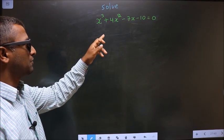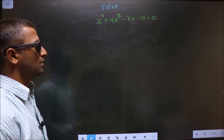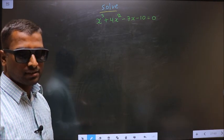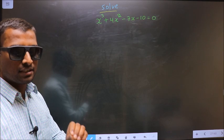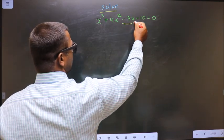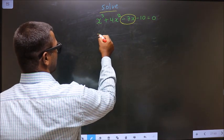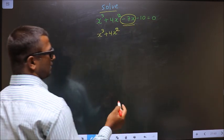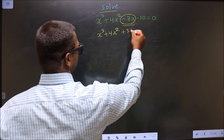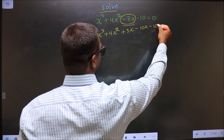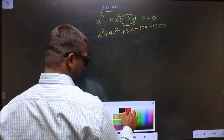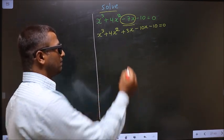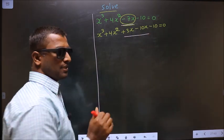Solve x³ + 4x² - 7x - 10 = 0. We need to find the values for x. For that, we change the middle term: in place of -7x, we write +3x - 10x. So the equation becomes x³ + 4x² + 3x - 10x - 10 = 0.